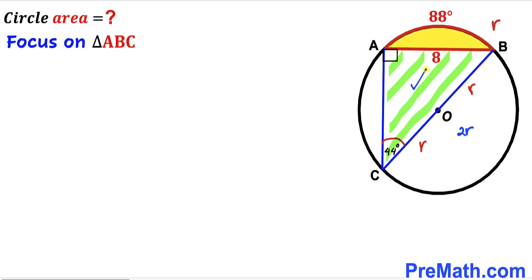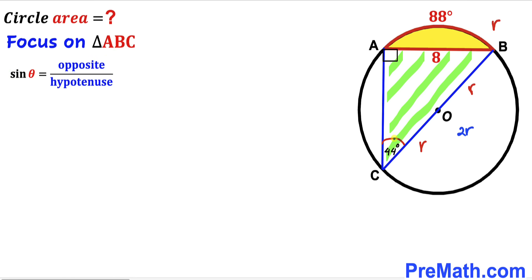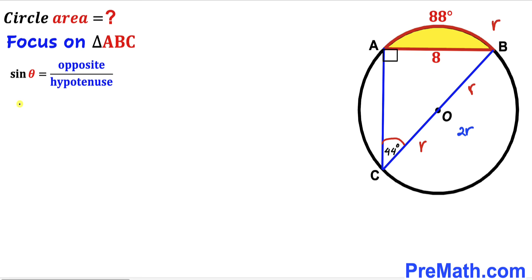Now let's focus on this right triangle ABC and recall the trigonometric ratio: sine of angle theta is always equal to the opposite side divided by the hypotenuse. In our case, the angle is 44 degrees, so the side opposite to that is 8, and the hypotenuse is the diameter 2r. So therefore sine of 44 degrees equals 8 divided by 2r, which simplifies to 4 divided by r.